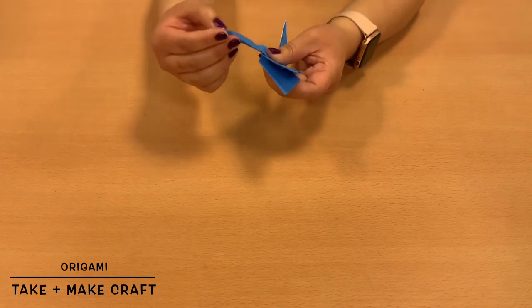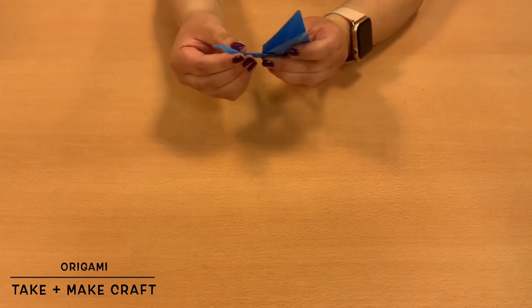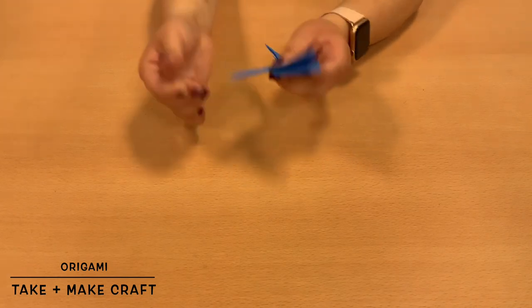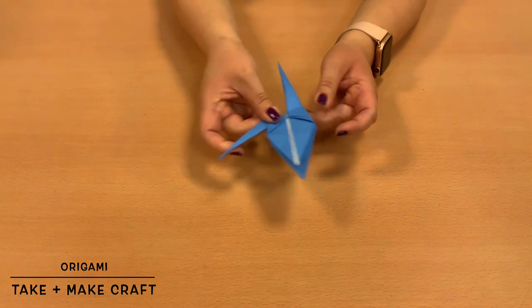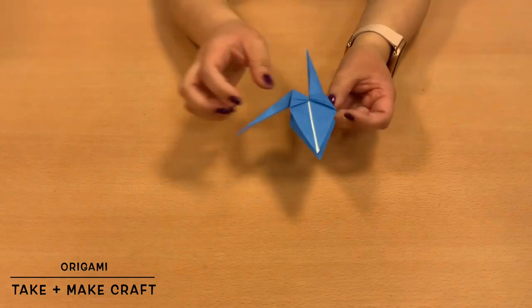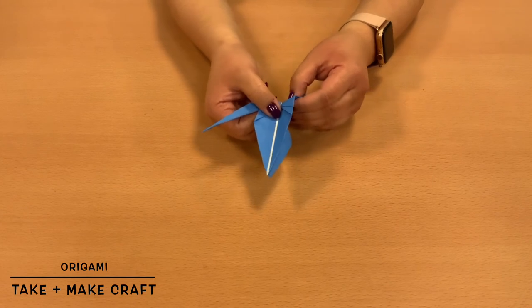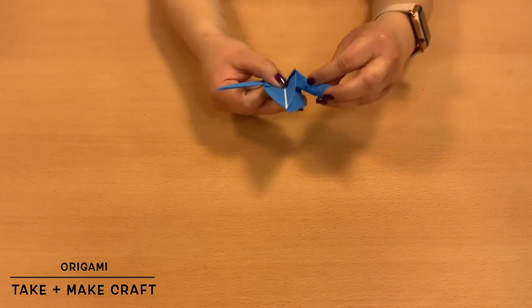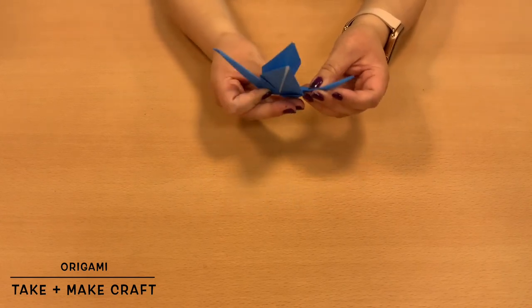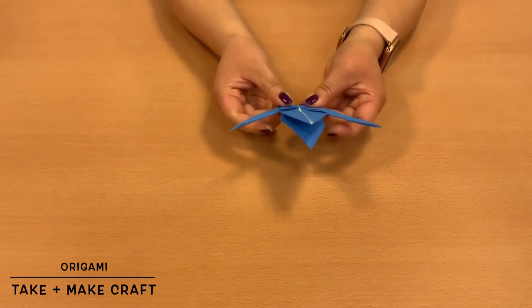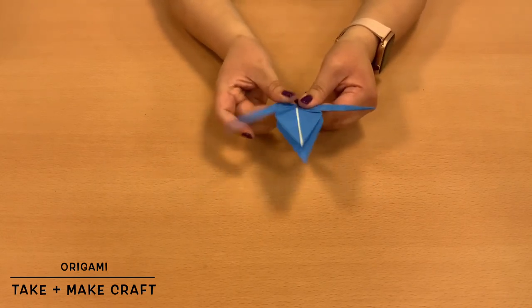And then, you'll fold at this crease right here. Then, you'll go ahead and do it on the other side. So, open it up, put your thumb right in here, so that you can go ahead and make the reverse fold, like so. And then, it kind of looks like you have a W.